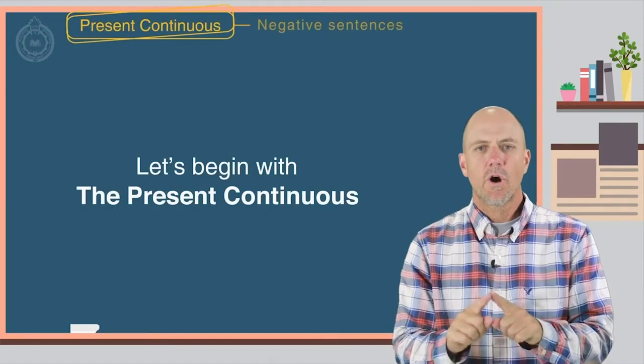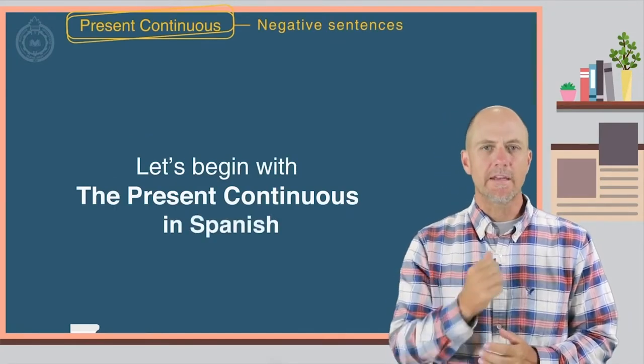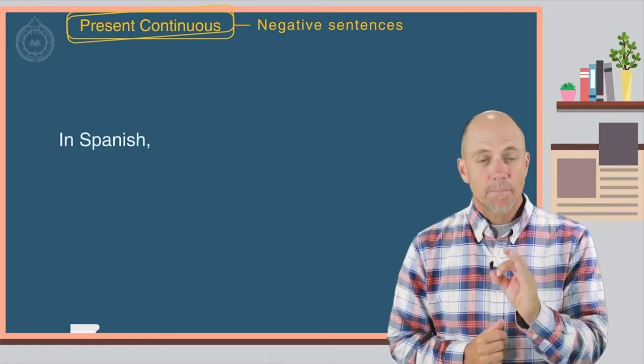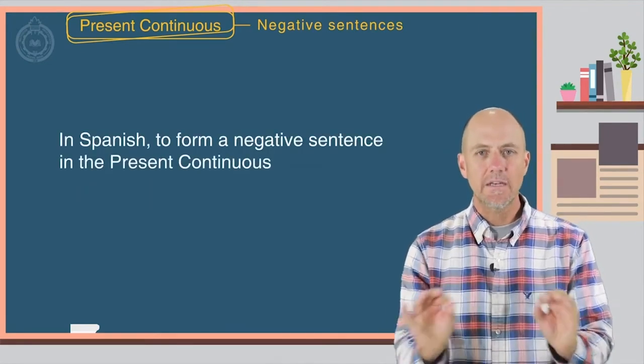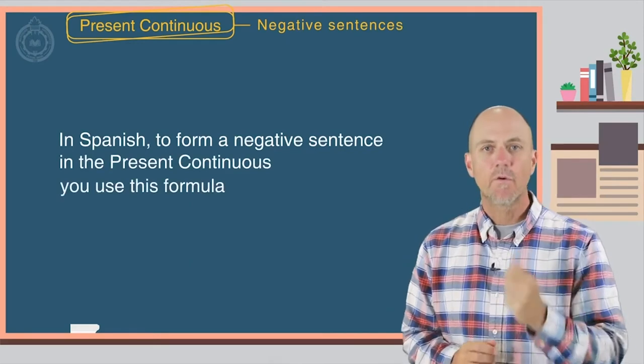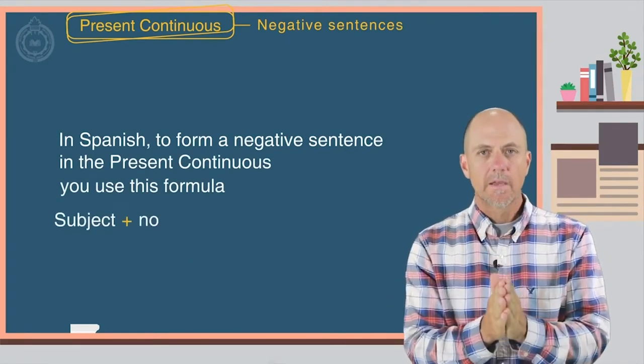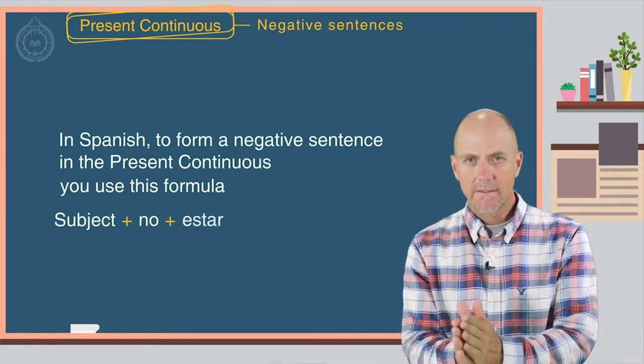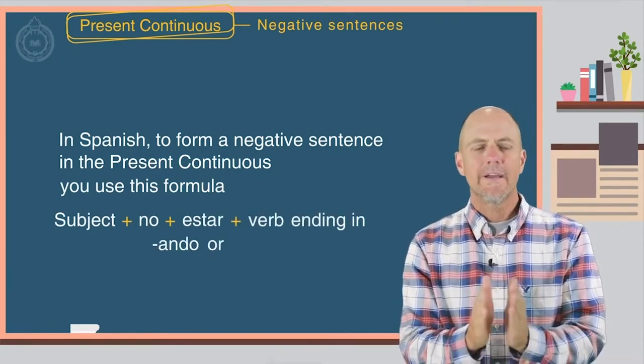Let's begin with what you already know, the present continuous in Spanish. In Spanish, to form a negative sentence in the present continuous, you use this formula: the subject, plus the word no, plus estar, plus the verb ending in ando o yendo.